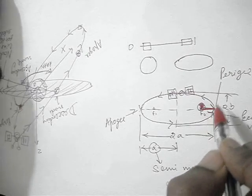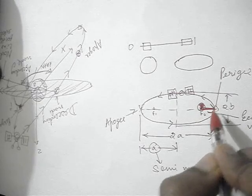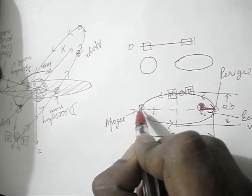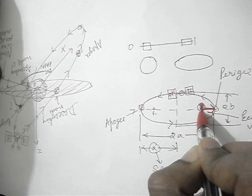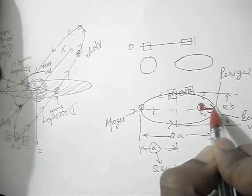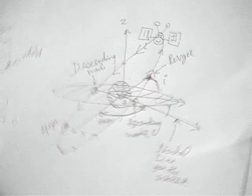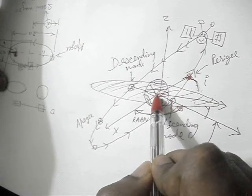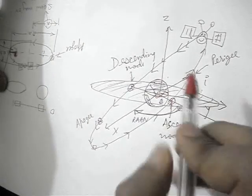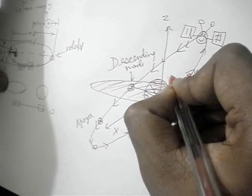Now let's get back to the perigee. This is our perigee and this is our apogee. Since we have understood what the eccentricity vector is, what perigee is, and what apogee is, let's get back to this figure where we have marked our perigee, our earth, and our apogee.